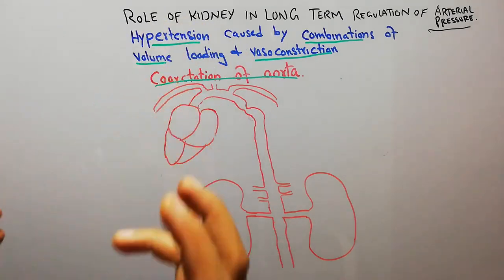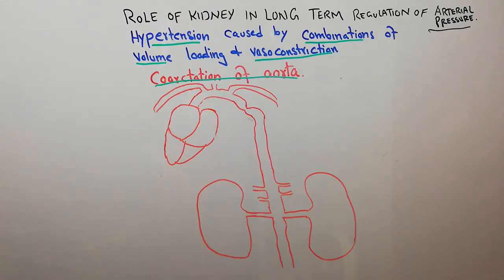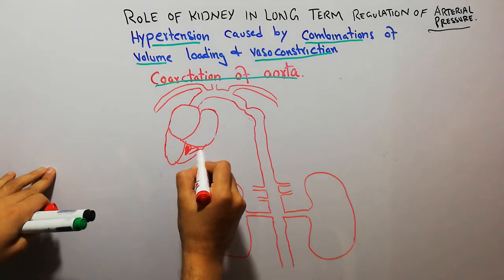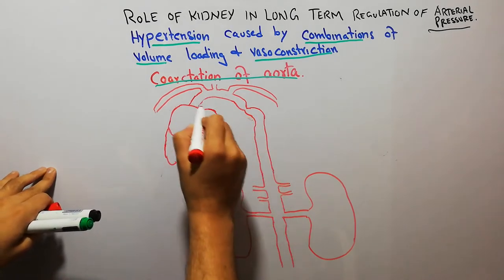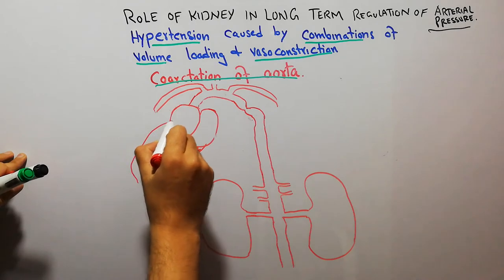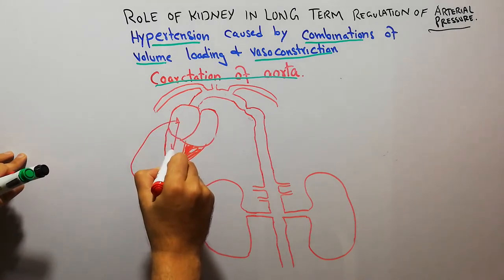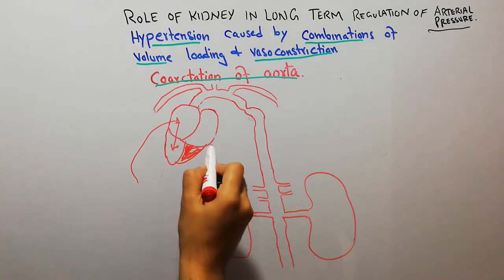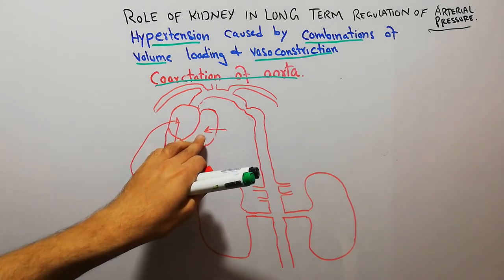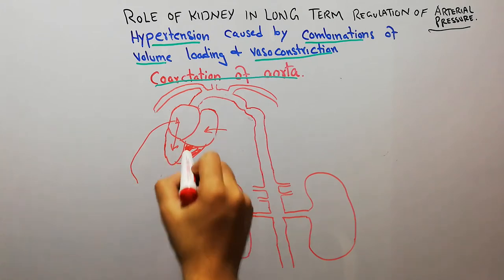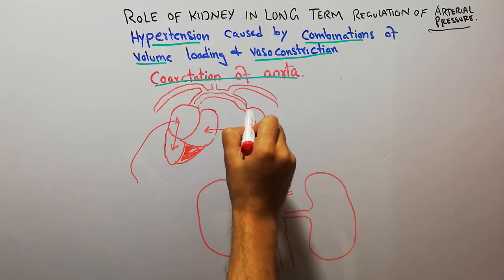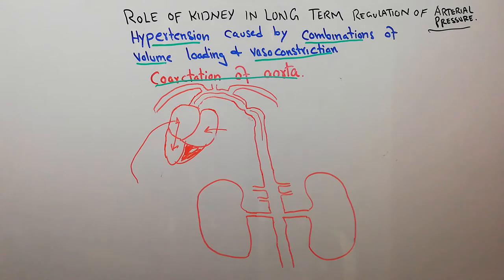What is the aorta? The aorta is the largest blood vessel or the largest artery, which takes blood from the left ventricle and supplies blood to the whole body. The deoxygenated blood comes to the right atrium, then goes into the right ventricle, from the right ventricle it goes into the lungs, and from the lungs the oxygenated blood comes into the left atrium, then into the left ventricle, and from the left ventricle the blood goes through the aorta to the whole body, supplying blood to all organs.